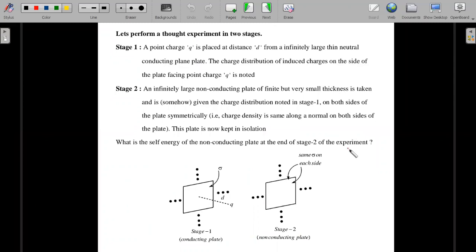So here's the formal wording. Let's perform a thought experiment in two stages. A point charge q is placed at a distance d from an infinitely large, thin, neutral conducting plane plate. The charge distribution of induced charges on the side of the plate facing the point charge q is noted. So here is the stage one diagram - you have a point charge, and there is an infinitely conducting large plane, and there will be charge induced on one side, and that facing side sigma has to be noted in the stage one. So that charge distribution has been noted.